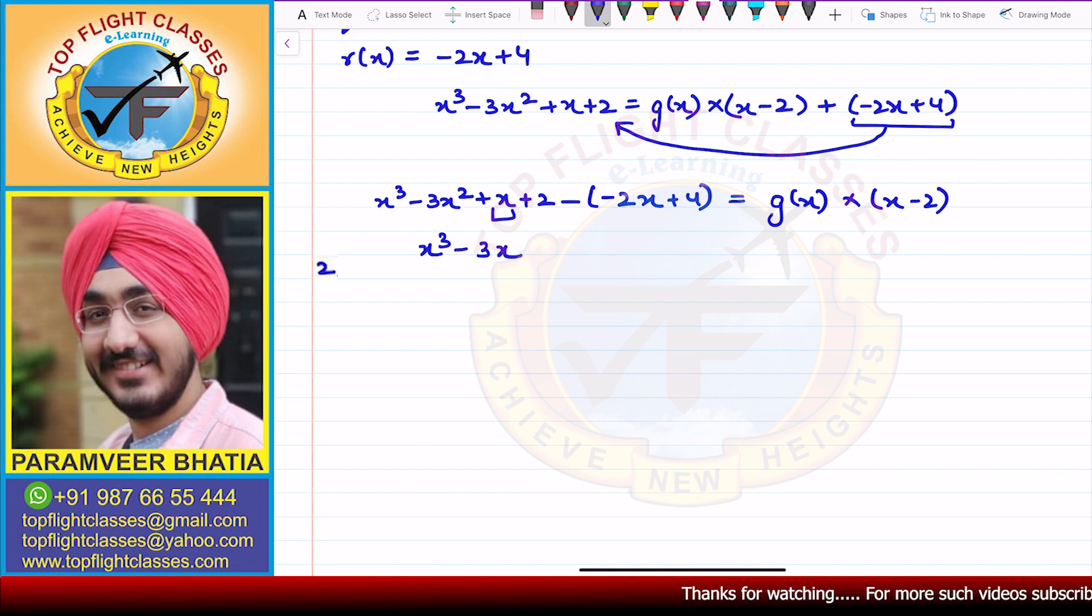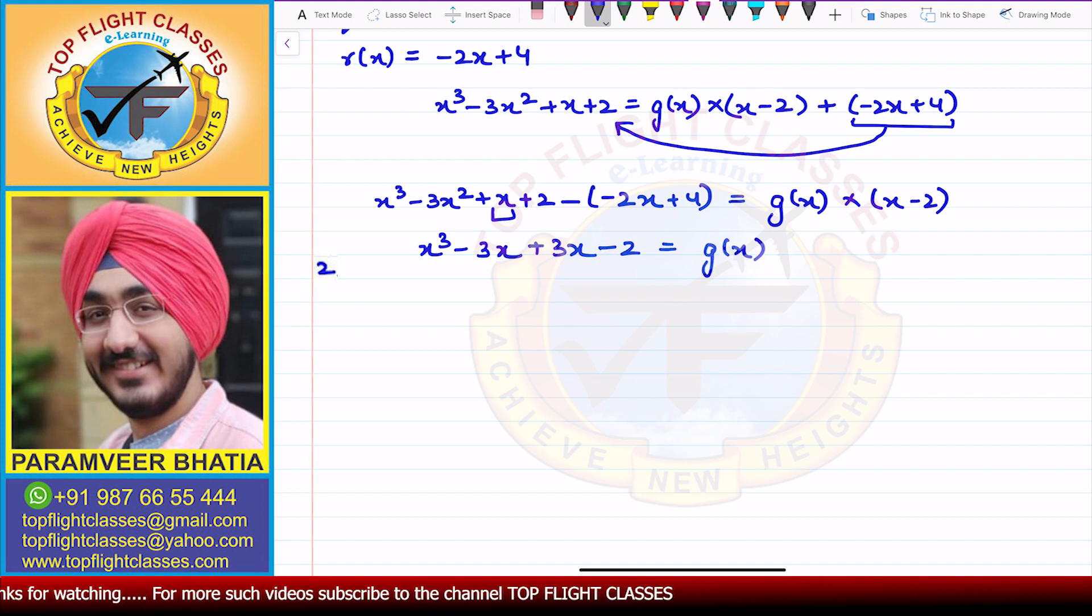Now we have x minus of -2x, that is +2x. So x + 2x = 3x, and we have +2 and -4, so -2. This equals g(x) × (x - 2).